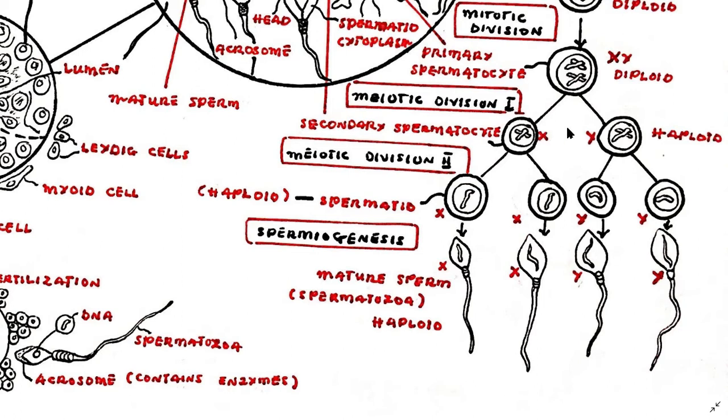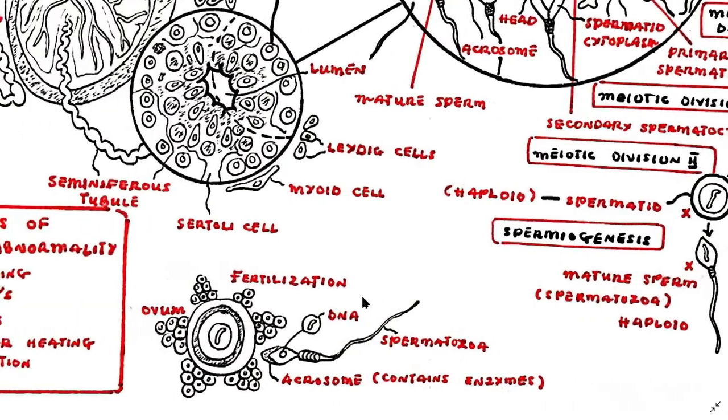The secondary spermatocytes enter meiosis two and again divide forming spermatids. DNA is not replicated in meiosis two, therefore these cells have only half their original DNA. During fertilization this DNA will be combined with the DNA of the maternal ovum.